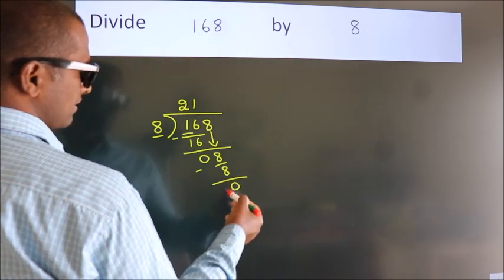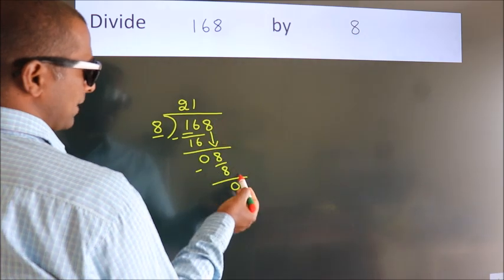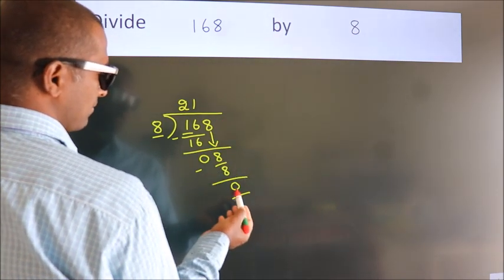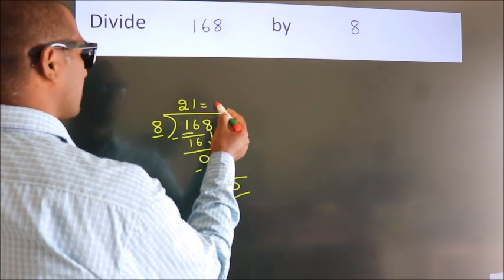After this, no more numbers to bring down. And we got remainder 0. So this is our quotient.